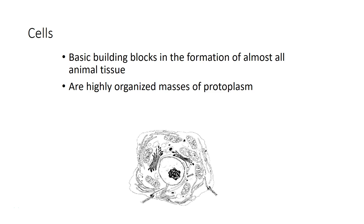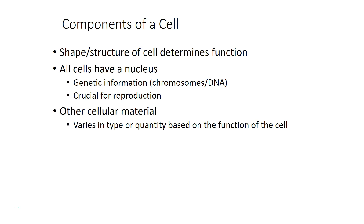Cells are the basic building blocks for almost all types of anatomy for humans and animals. Cells are highly organized masses of protoplasm. How cells work depends on their shape and structure. Every cell has a nucleus that's crucial for the cell reproducing itself and making cells of similar types. There can be other types of cellular material inside the cells depending on their function.